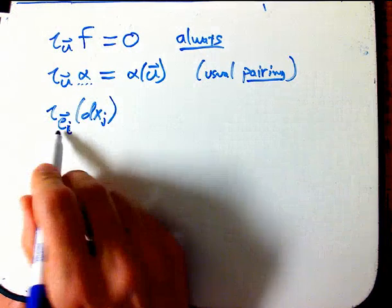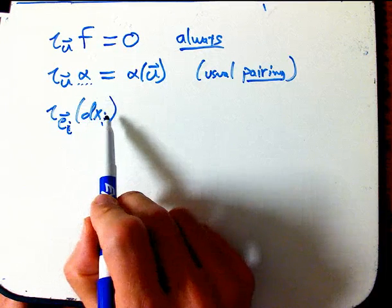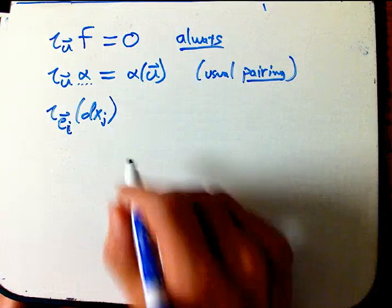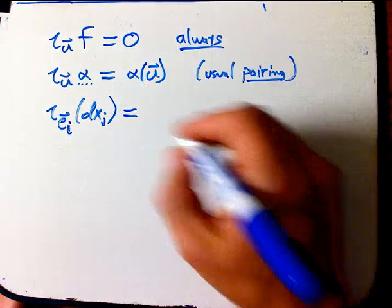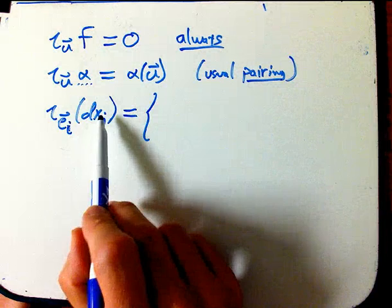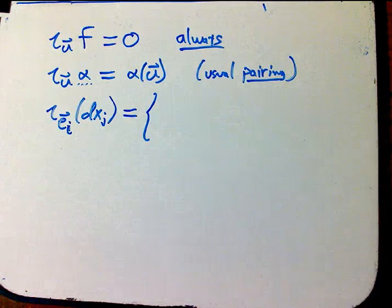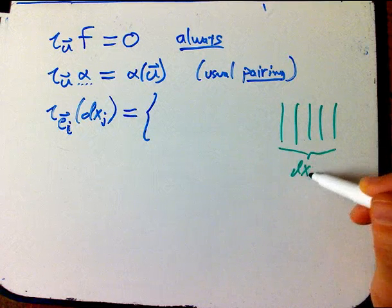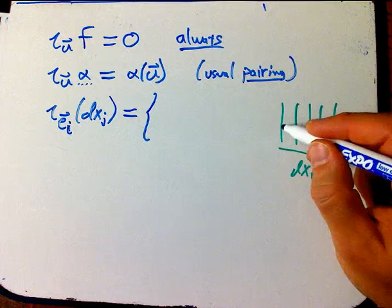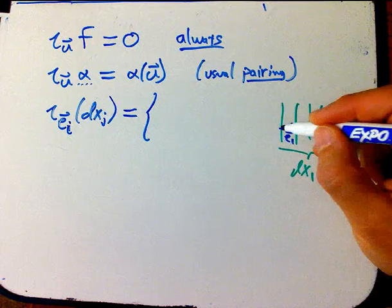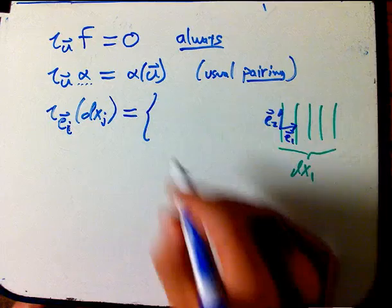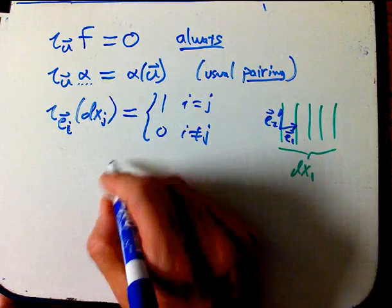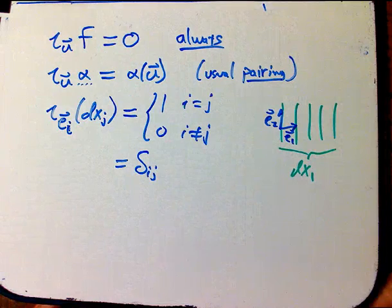If I have the i-th basis vector interior product into the j-th dx, where these guys are associated with each other, they're dual bases, to use more technical language, that's just going to be, well, if I have dx1 eating e1, that's one. If I have dx1 eating e2, that's zero. The picture here is like, here's dx1 with the stacks kind of going in the x1 direction. Here's e1, that goes one. Here's e2, that goes zero stacks. And so you just get one if i is equal to j, and zero if i is not equal to j. Or in other words, if you know about the Kronecker delta symbol, it's just delta ij.